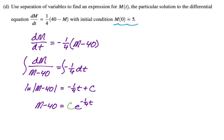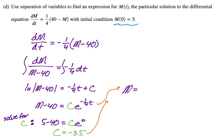Let's solve for c. We know that m of 0 is 5. So we're solving for c, kind of threw everything out there. We're trying to solve for c. We have to plug in 5 for m, and we have to plug in 0 for t. So we get 5 minus 40 equals c e to the 0. e to the 0 is 1. So c is negative 35.